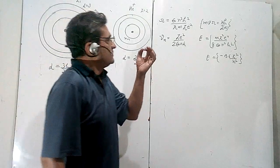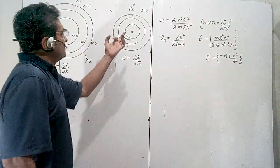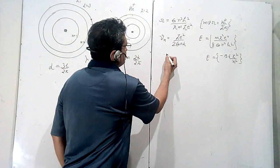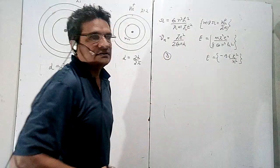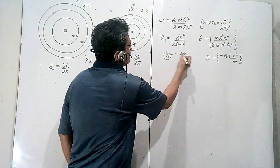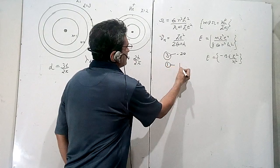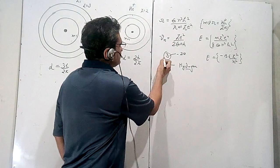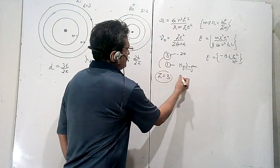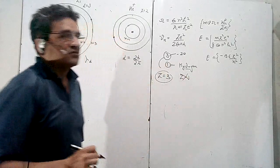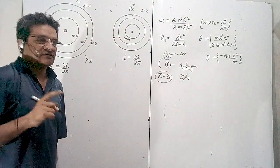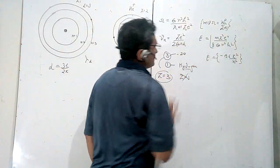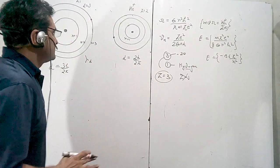A hydrogen-like atom has a single electron in orbit around the nucleus. For example, if an atom has three electrons and you remove two, one electron remains and it becomes hydrogen-like. The only difference is that z equals three, not one as in hydrogen. These formulas should be on your fingertips — they are very, very important.